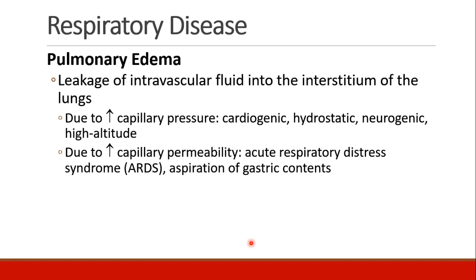Next, let's talk about pulmonary edema. We know that edema is whenever fluid leaks out of the vasculature into some interstitial space. In pulmonary edema, the intravascular fluid is leaking into the interstitium of the lungs. This can happen for two primary reasons. You can have increased capillary pressure, which pushes fluid from the capillaries into the lung parenchyma and into the interstitium. You can have increased capillary pressure for cardiogenic reasons, high hydrostatic pressures, neurogenic pulmonary edema due to a brain injury, or altitude sickness can also lead to the development of pulmonary edema.